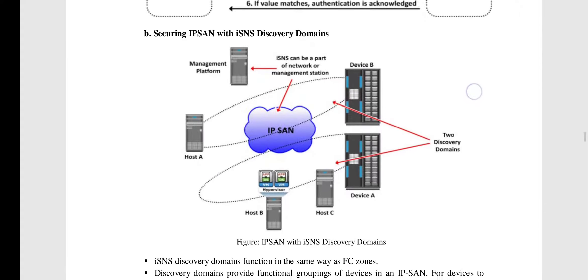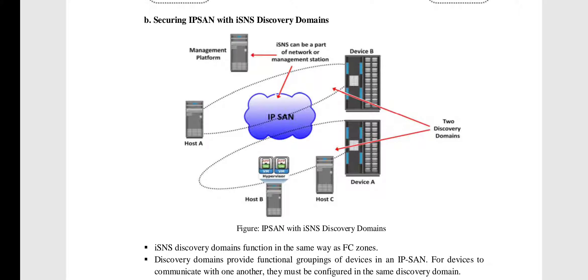The next way of securing IP SAN is using iSNS Discovery Domains. iSNS stands for Internet Storage Name Server. Here we use iSNS discovery domains — the IP SAN is secured by having two discovery domains, so only hosts configured within a particular domain can access that domain.